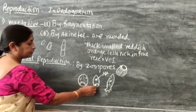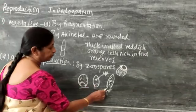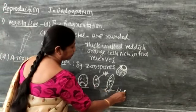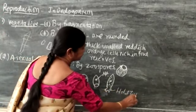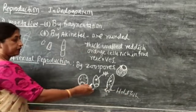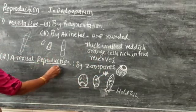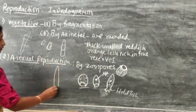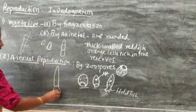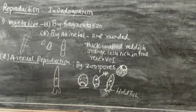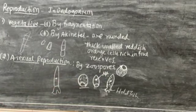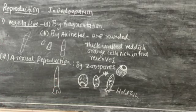The lower part, which is colorless, develops into what is known as a holdfast. And the terminal part, the upper part, gradually develops into the elongated filamentous way of Oedogonium. So this is all regarding asexual mode of reproduction in Oedogonium.